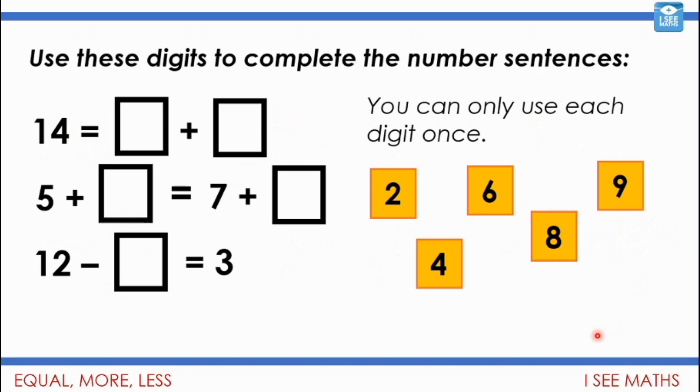Okay now that will hopefully give you some skills to have a go at this task. So use these digits to complete the number sentences. You can only use each digit once. So have a think, where are you going to start? Which numbers are you going to position first? Which one will you do next? And so on. Can we complete this puzzle using each number only once? Pause the video and have a go.